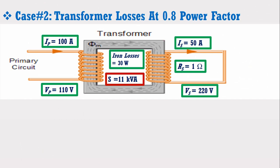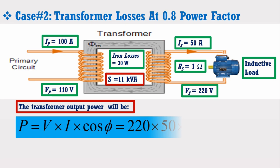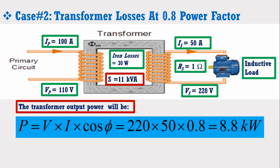Now consider Case 2: we calculate the output power and losses at 0.8 power factor. Suppose the transformer is supplying power to an inductive load such as an induction motor. The transformer output power is given by P = V × I × cos φ. Putting the values of secondary voltage, current, and power factor, we find that out of 11 kVA apparent power, the transformer is able to provide only 8.8 kW of useful power. The rest of the power is converted into reactive power. This is the reason why the transformer is not rated in kW — because depending upon the power factor, the active power changes.